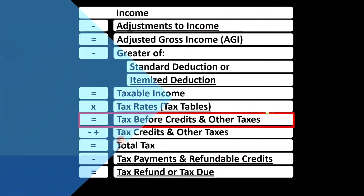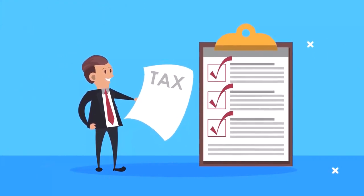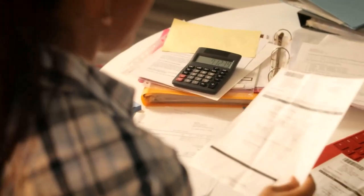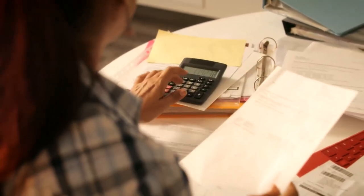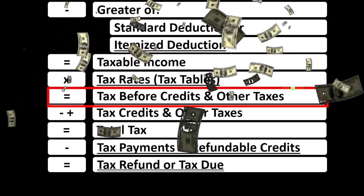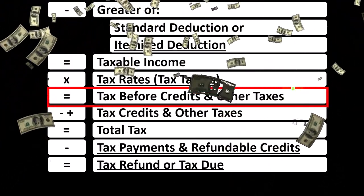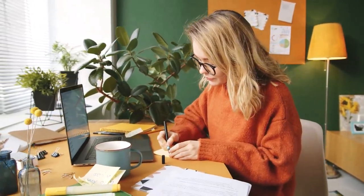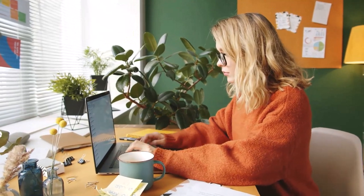We talked about a progressive tax system versus a flat tax system in prior presentations, but note it can get complicated to figure out the actual tax without tools. You can use tables to figure out the tax, and of course software helps as well. Once we figure the tax, we're not done — we also have non-refundable credits, other taxes such as self-employment tax, refundable credits, and payments already made through withholdings or estimated tax payments to get to the bottom line.